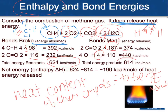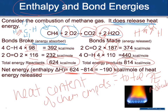The total energy from products is 814 kcal/mol. My net change in energy — energy put in minus energy released — gives a negative enthalpy here. So I'm getting a negative delta H, which means energy was released. A negative value means energy was released; a positive value means energy had to be absorbed.